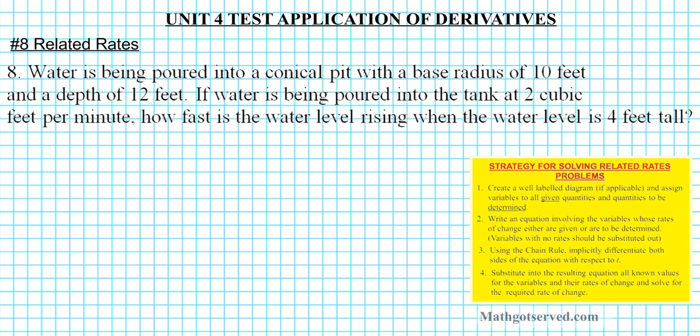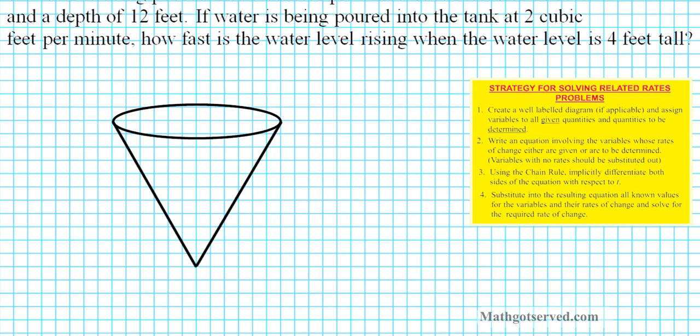Okay, so the first thing we are going to do is we are going to create a well labeled diagram. So there goes our conical tank that's inverted. So we have the base radius is 10 feet. So the base radius let's indicate that, that's 10 feet. Alright, and then the height of the tank is 12 feet or the depth. Let's indicate that also, so this is 12 feet, the depth of the tank.